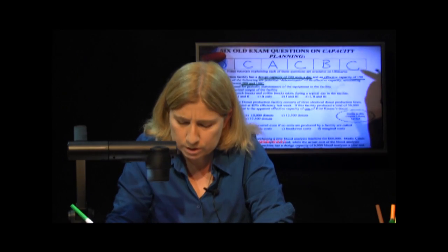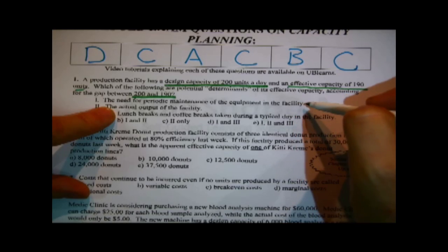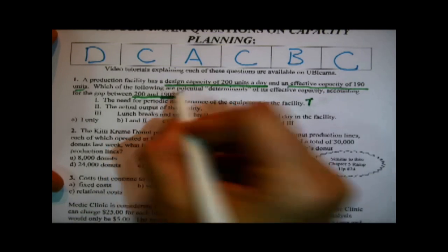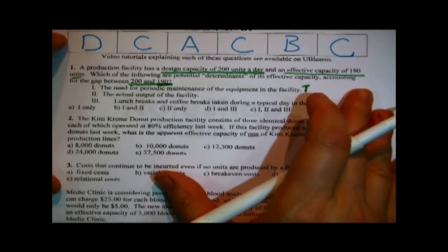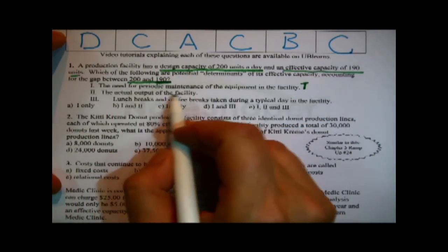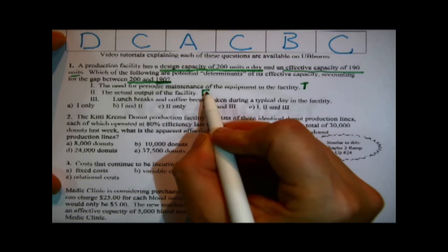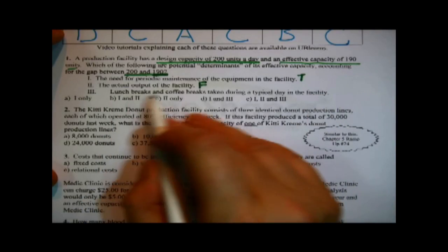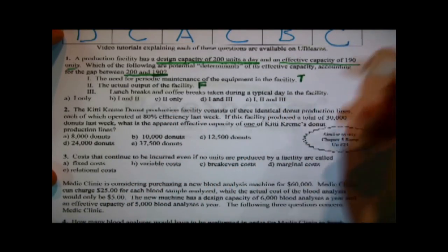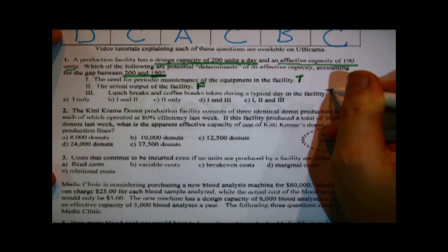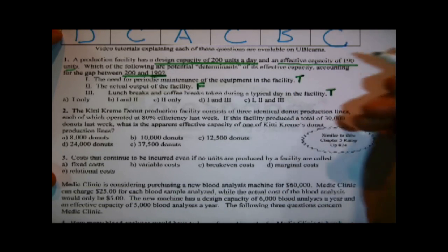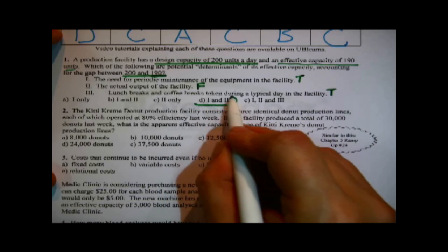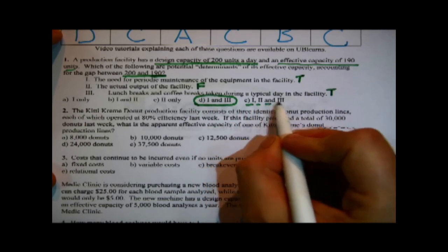We just have to test each option separately. The need for periodic maintenance of the equipment — I'll tag that as true, because that could be a very real reason why you only generally get 190 out of something designed for 200. The actual output of the facility — that is a distractor; it has nothing to do with what the facility is actually doing right now. Lunch breaks and coffee breaks taken during a typical day — that is also another stereotypical determinant of effective capacity. So the top and bottom options tested true; we're looking for one and three.